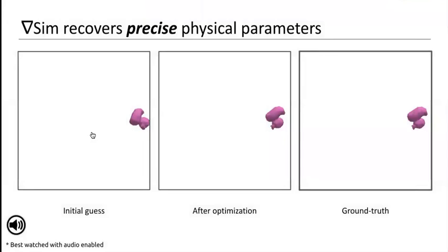Precise estimation of physical parameters is important for complex geometries. As seen on the left, even a minor error in friction parameters can lead to different end states. GradSim, however, can recover parameters accurately up to 3 to 5 places of decimal.